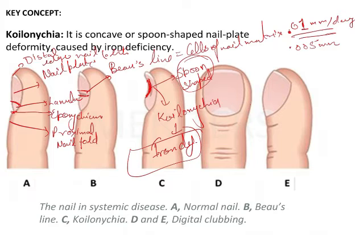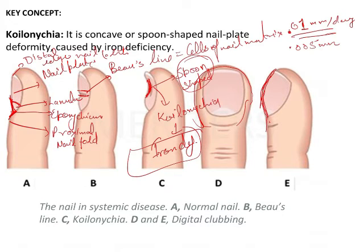Now if you see this particular figure, here you will see the nails and there will be convexity. Generally the nail bed angle is acute, very little angle. But if there is pathology, the nail bed angle will become too large, and the convex surface of the nail plate will be seen. This particular phenomenon is known as clubbing of the nails.